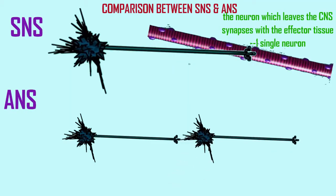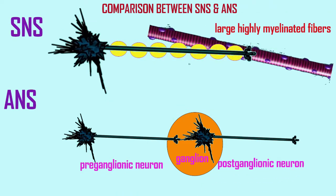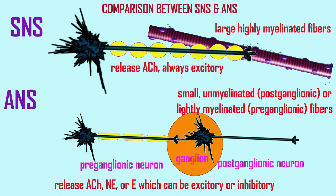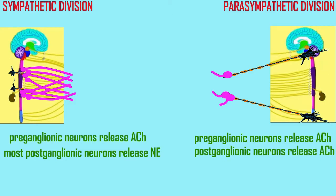The neurotransmitters and the receptors for neurotransmitters used by the autonomic nervous system are important, especially given the importance of medications which affect blood pressure, asthma, and so many other aspects of autonomic function. But it is complicated given that different neurotransmitters can be produced by pre-ganglionic neurons and post-ganglionic neurons, and there can be differences between the sympathetic division and the parasympathetic division.